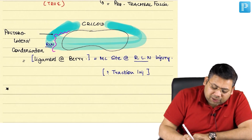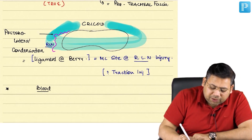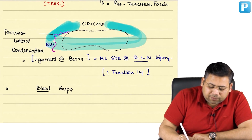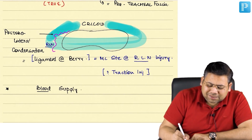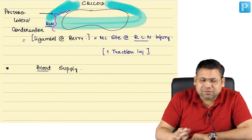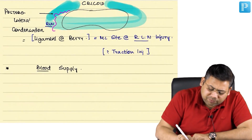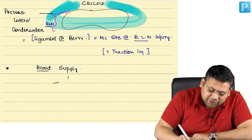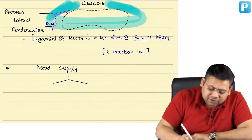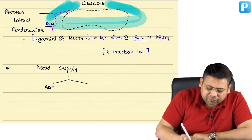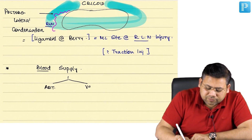When you talk about the blood supply, the blood supply is simple — arterial and venous.